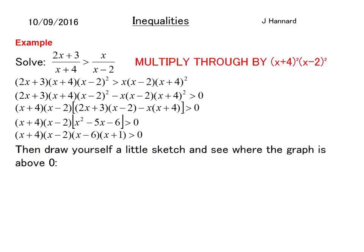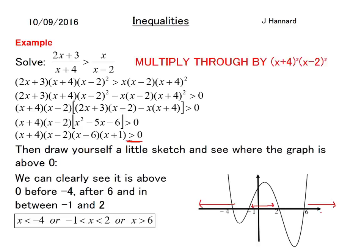Then, like you know I like to do, you draw yourself a little sketch and see where the graph is above zero because it's telling you it wants to be above the ground. So we draw a nice little quartic. It looks like a W when it's positive, it looks like an N when it's a negative quartic. So it goes through minus 4, 2, 6, and minus 1. And it's above the ground at this point here from minus 4 backwards, and between the values of minus 1 and 2, and also from 6 onwards. So how we write that is by saying x is less than minus 4, or minus 1 is less than x which is less than 2, or x is greater than 6. And that is that.